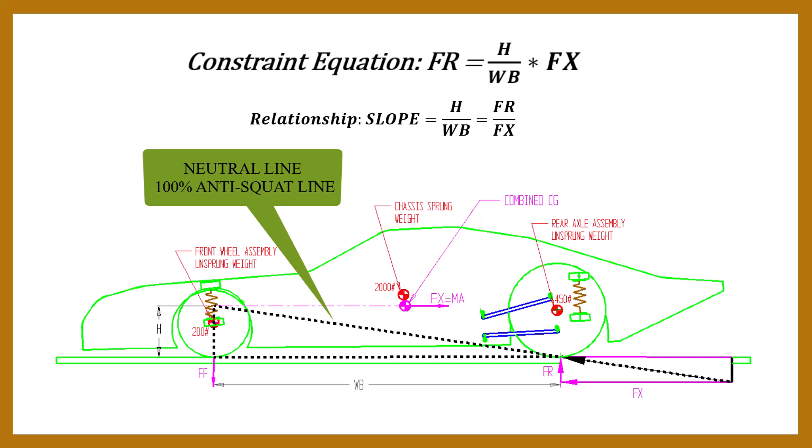Keep in mind, this has nothing to do with the 4-bar linkage. It's strictly about the ratio of the CG height to the wheelbase.